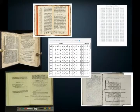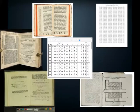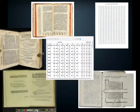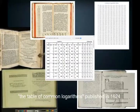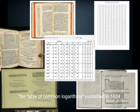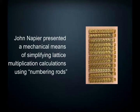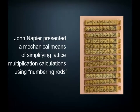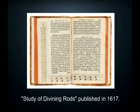Napier agreed with Briggs's suggestion, but due to ill health he left the responsibility of setting up the new logarithm tables to Briggs. The new tables were published in 1624 and were called the table of common logarithms. Napier also presented a mathematical means of simplifying lattice multiplication calculations using numbering rods, in his work 'Study of Dividing Rods,' published in 1617.